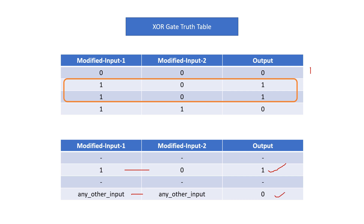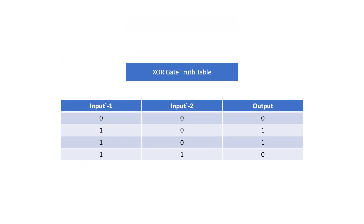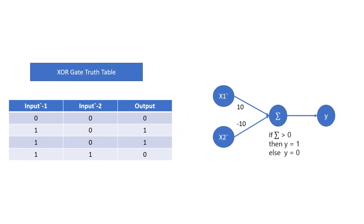With these modified inputs, we just have to tackle three distinct cases: (0,0), (1,0), and (1,1). We will call the modified inputs x1-dash and x2-dash — the dash sign just represents that this is not the actual input. The weights for this layer are 10 and minus 10, which I have calculated by trial and error method. In previous videos we calculated weights using a Python program with a feedback loop and activation function.